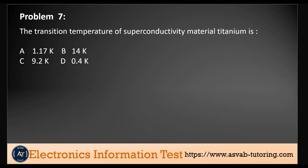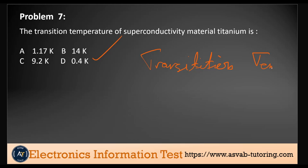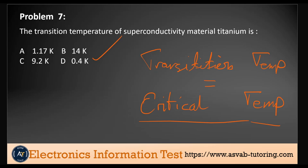Problem seven. The transition temperature of the superconductivity material titanium is one of these options, given in Kelvin. The answer is 0.4 Kelvin. The transition temperature of superconductivity is also known as the critical temperature, and for titanium it is 0.4 Kelvin.